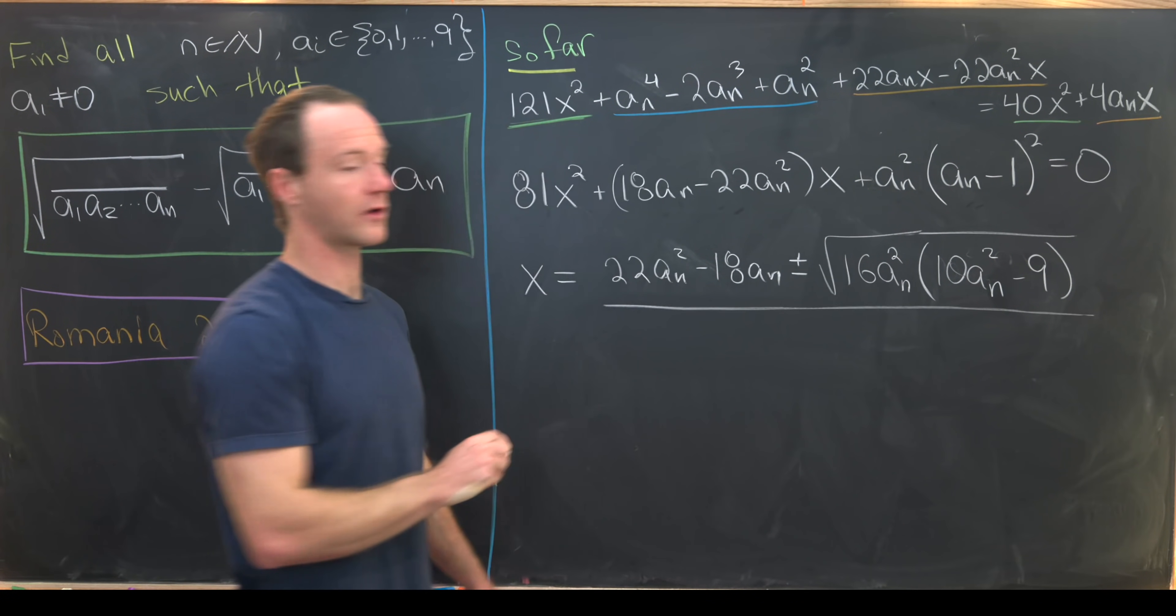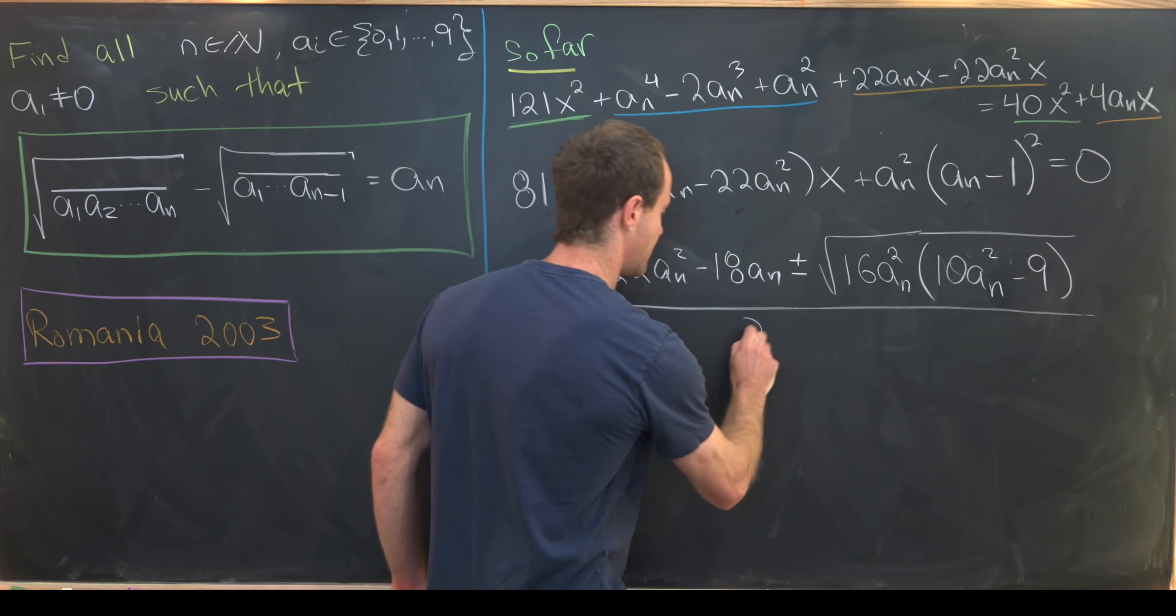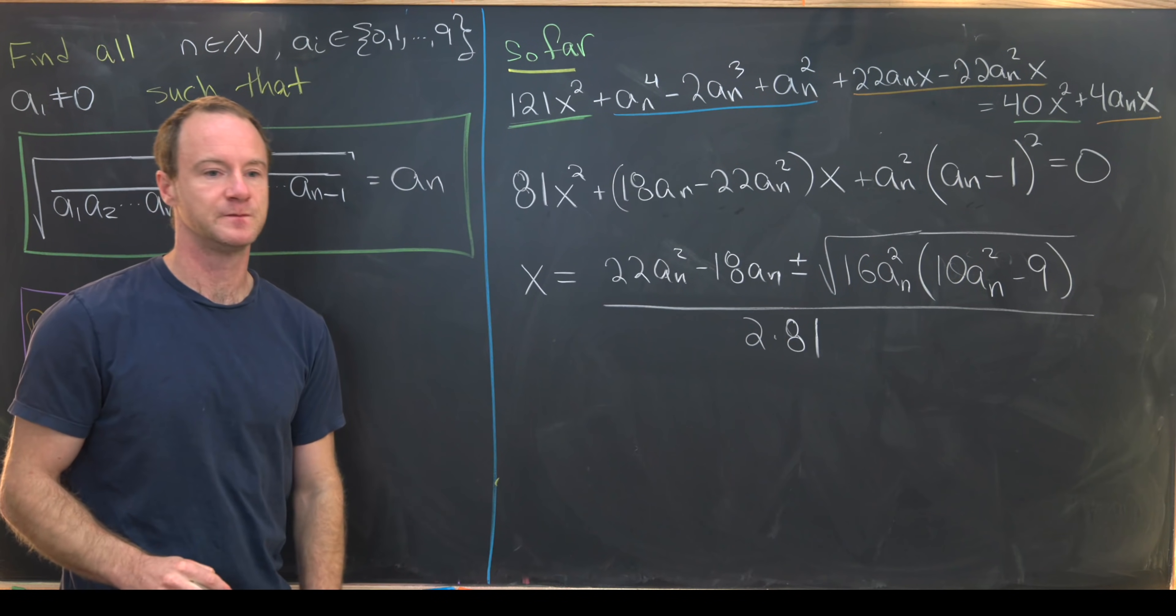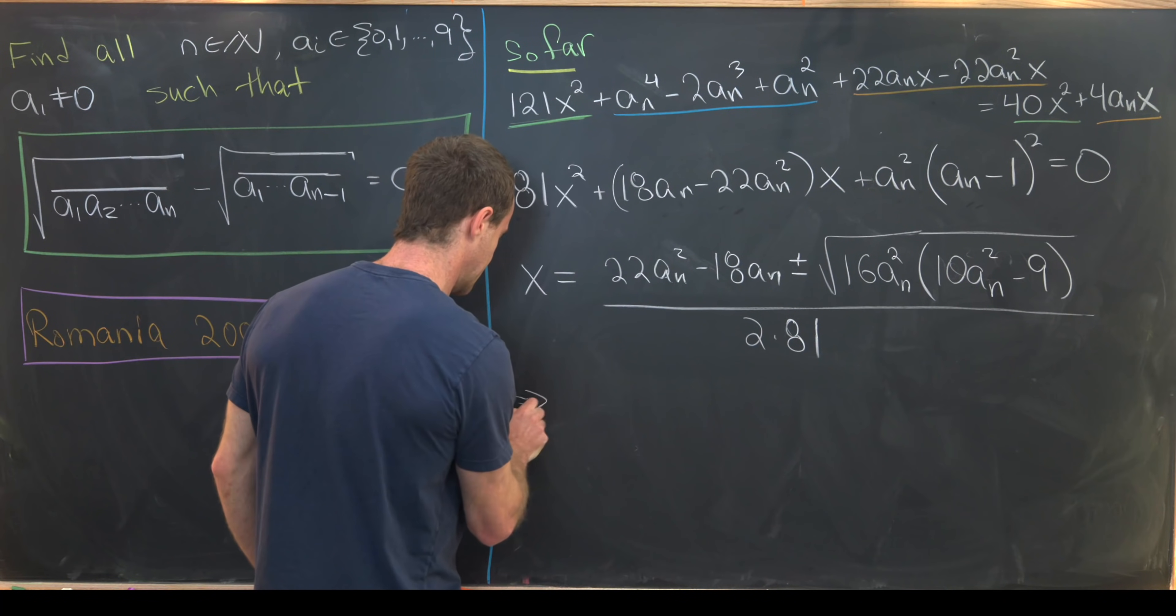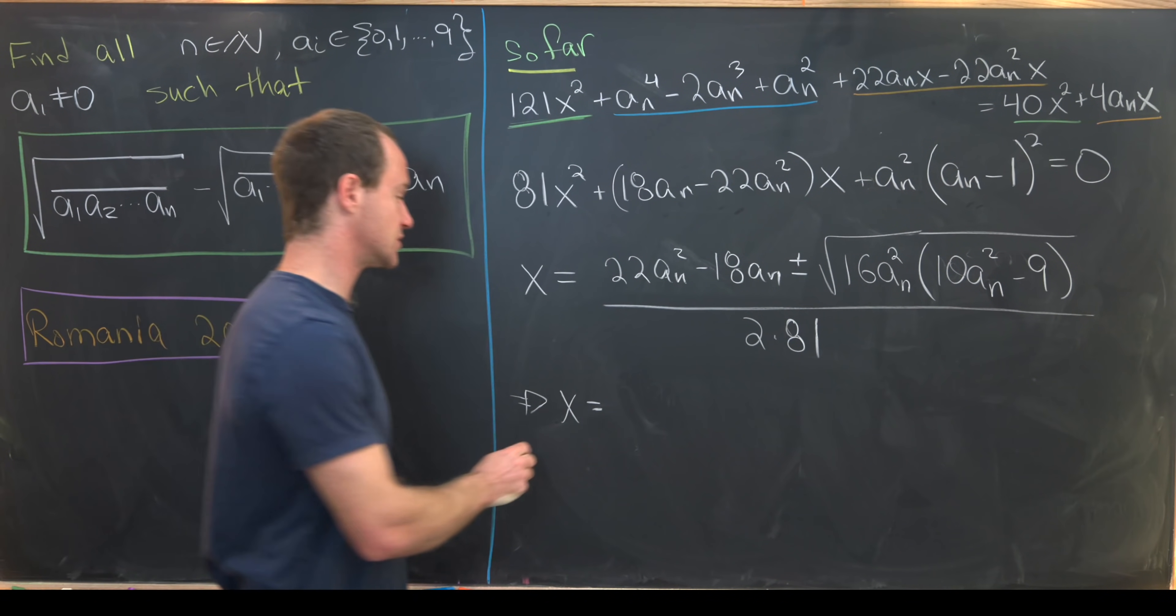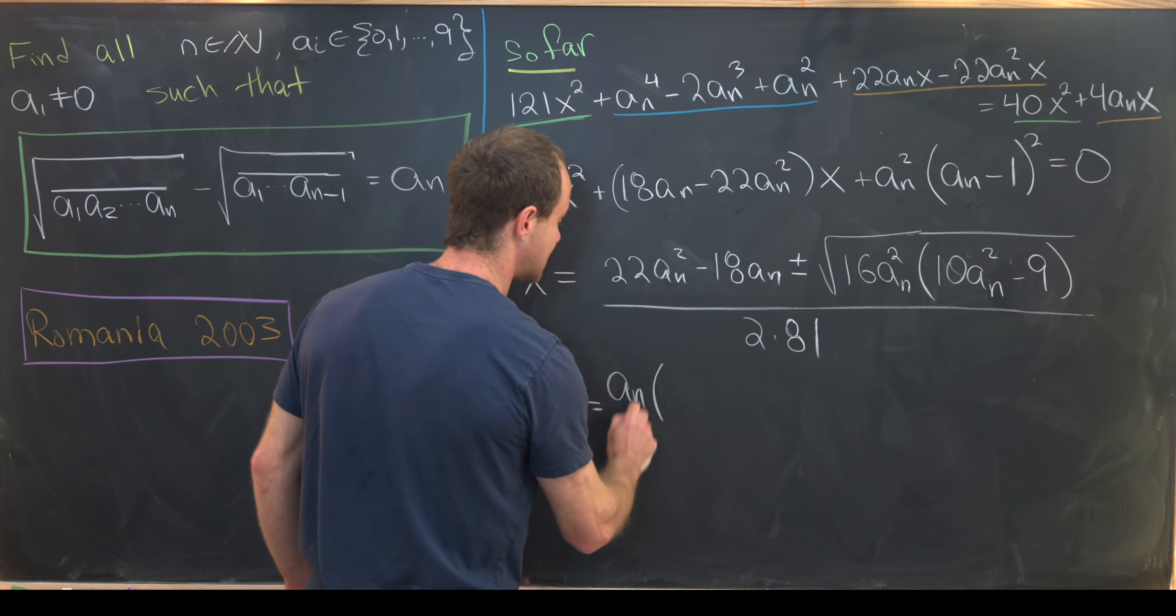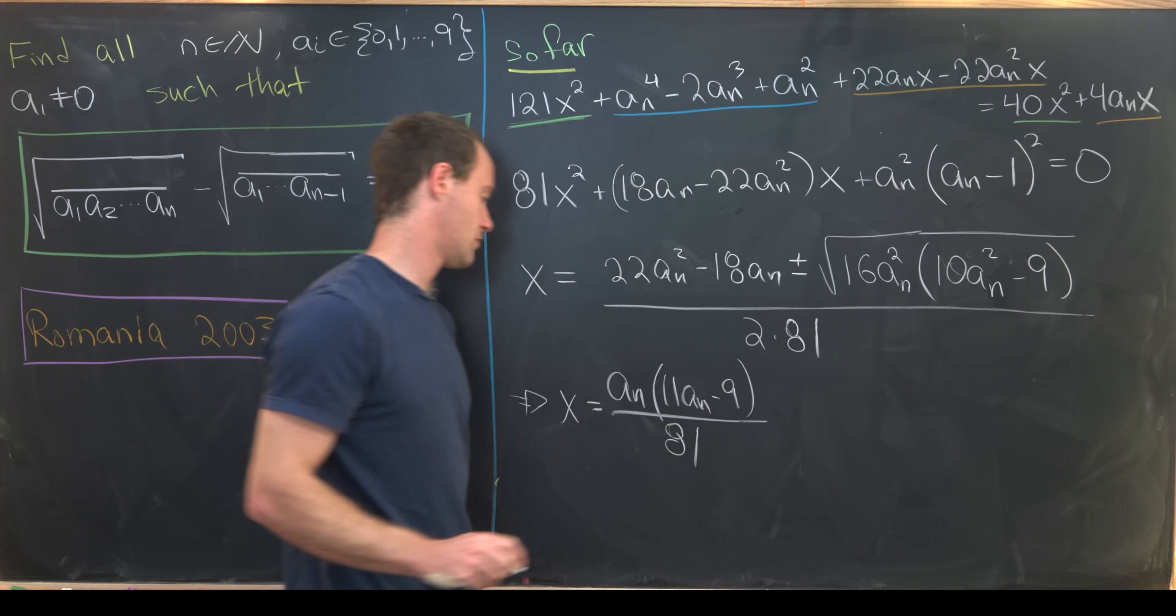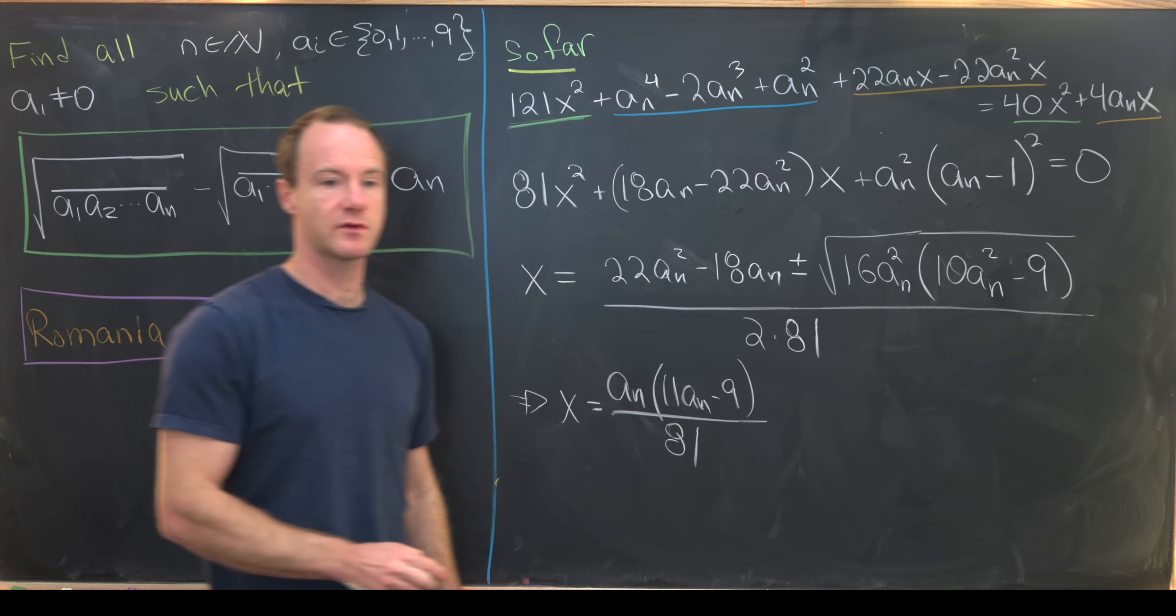And that's all over 2 times 81 from this guy right here. Okay, well a little bit of simplification can happen here. And we'll get x is equal to an times 11an minus 9 over 81, so that's what we get from this stuff outside of the square root.